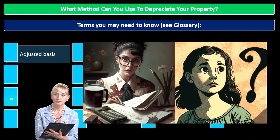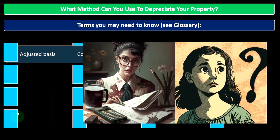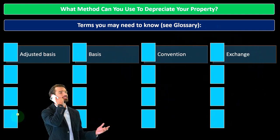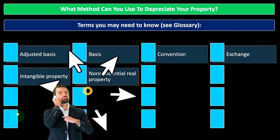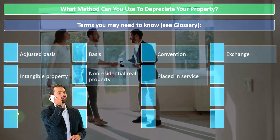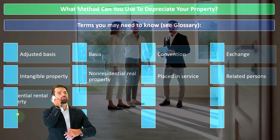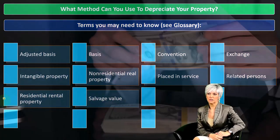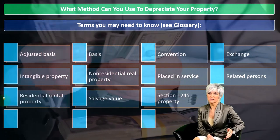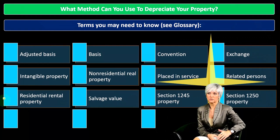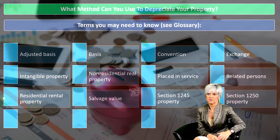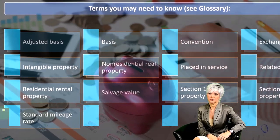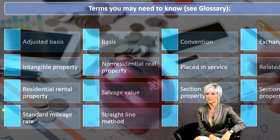What method can you use to depreciate property? Terms you may need to know: adjusted basis — the cost and the adjusted cost; convention — what kind of convention are we using for depreciation; intangible property; non-residential real property and when it was placed in service; related persons issues; residential rental property; salvage value — how much is it still worth at the end of its life; Section 1245 property and Section 1250 property — what type of property is it, which the tax code uses to determine what we need to do from an accounting and tax standpoint.